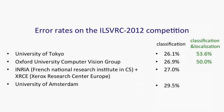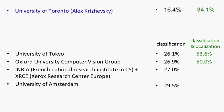Alex Krizhevsky's neural net got 16% error — a huge gap. Normally in these competitions, you don't see big gaps like that.